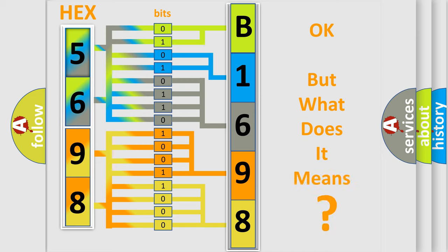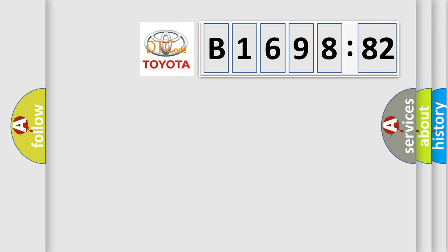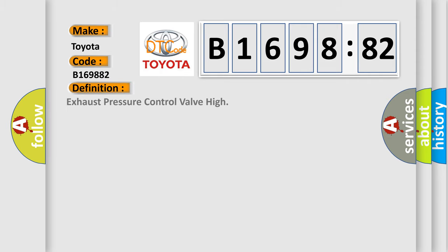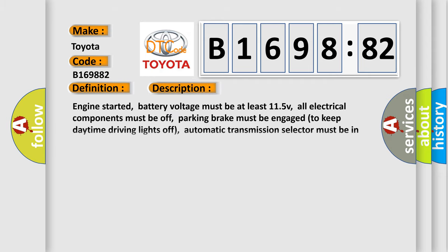We now know in what way the diagnostic tool translates the received information into a more comprehensible format. The number itself does not make sense to us if we cannot assign information about what it actually expresses. So, what does the diagnostic trouble code B169882 interpret specifically for Toyota car manufacturers? The basic definition is: Exhaust pressure control valve high.